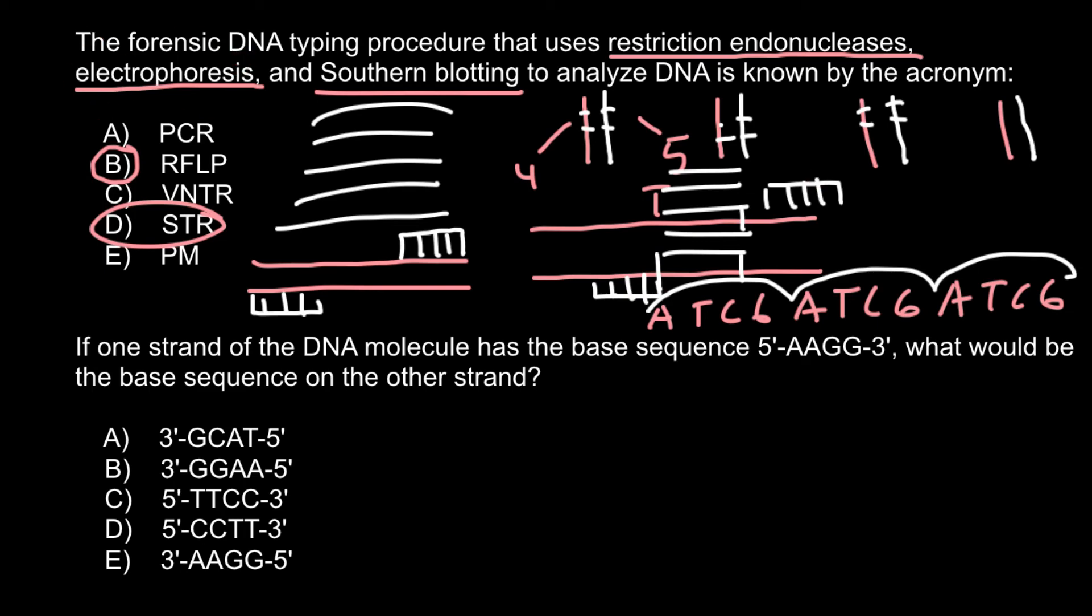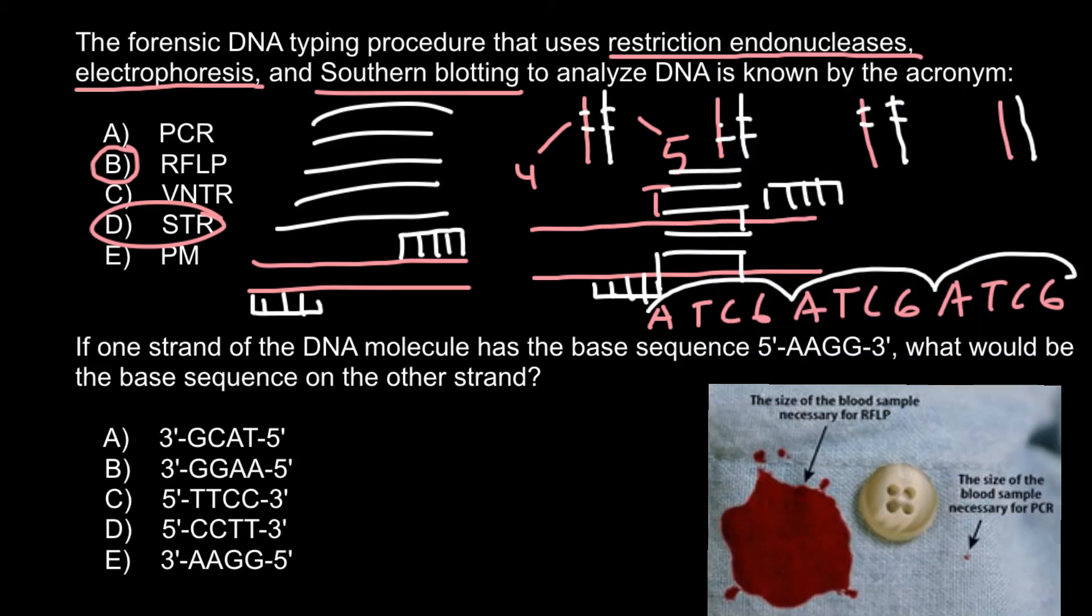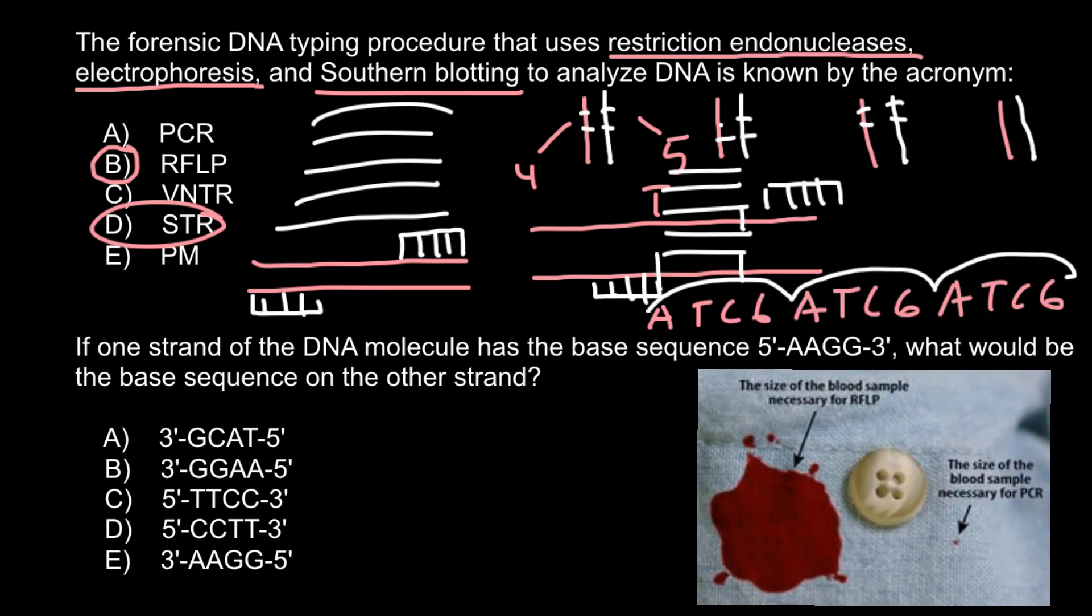So here is the picture. As you see, the first technique in this list, restriction fragment length polymorphism that I explained earlier, took between 10 and 12 weeks and large samples were needed. With PCR, as you see, very tiny samples are needed because they can be multiplied in million copies.